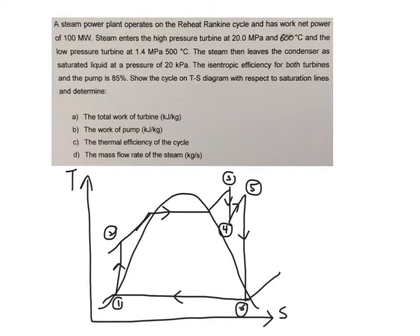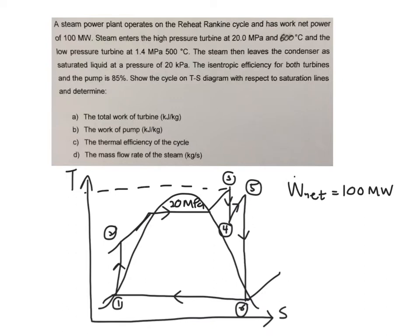When you have the Reheat Rankine problem, you need to make sure that the exit of your low pressure turbine is in the mixture region. The W_net given is 100 megawatts. Steam enters the high pressure turbine at 20 megapascals and a temperature of 600 degrees C — this is your state 3 condition.